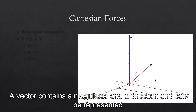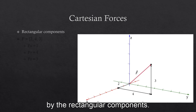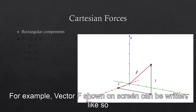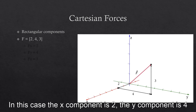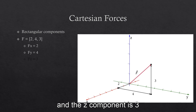A vector contains a magnitude and a direction, and can be represented by its rectangular components. For example, vector F shown on screen can be written like so. In this case, the x-component is 2, the y-component is 4, and the z-component is 3.